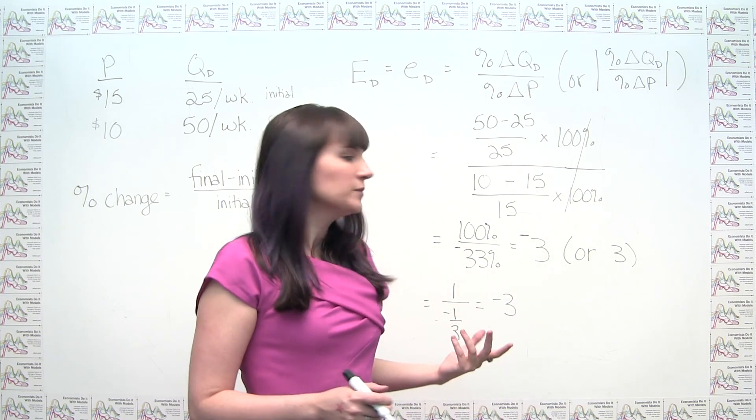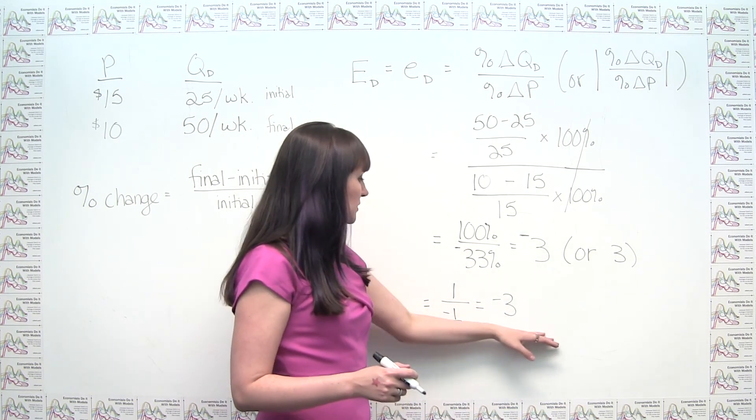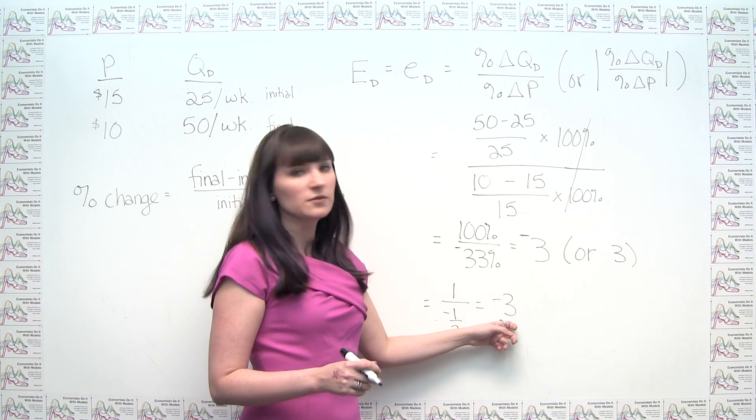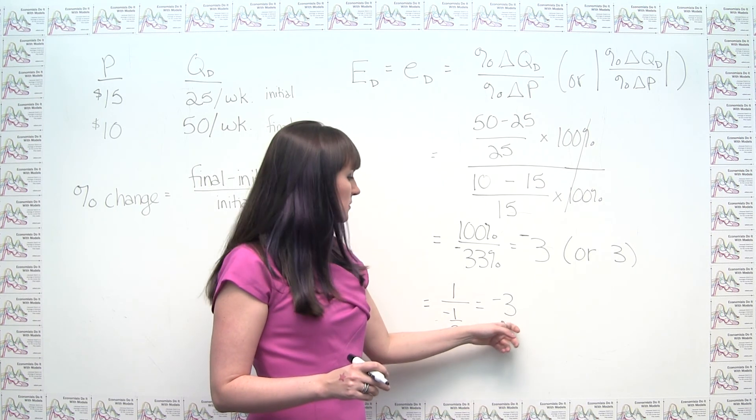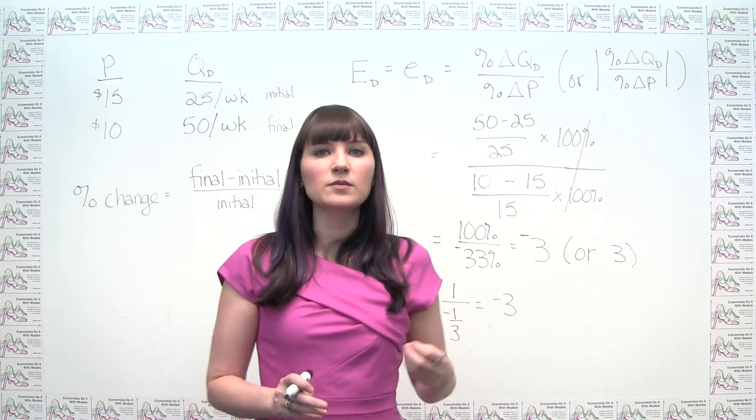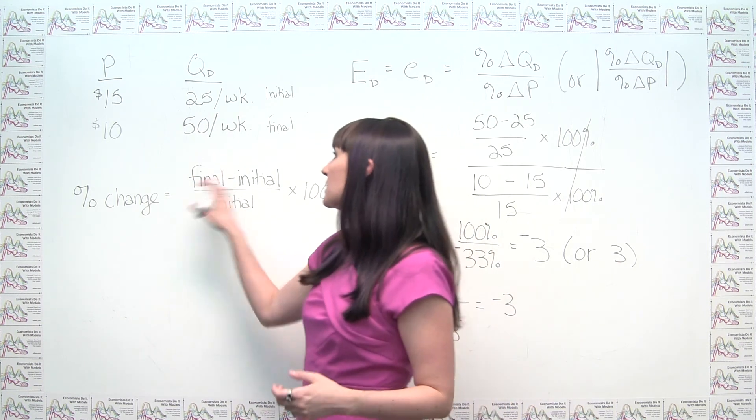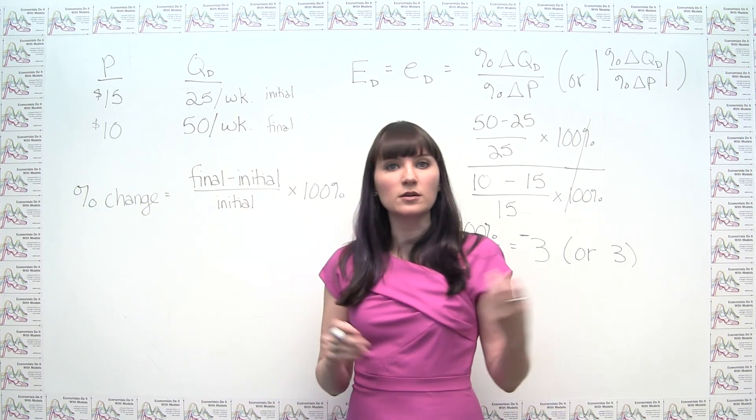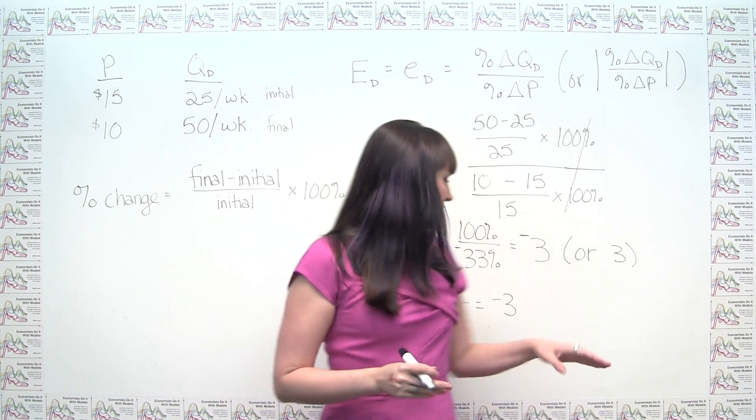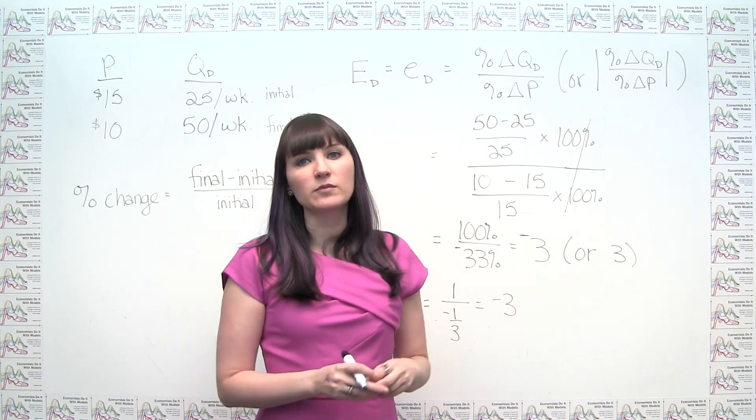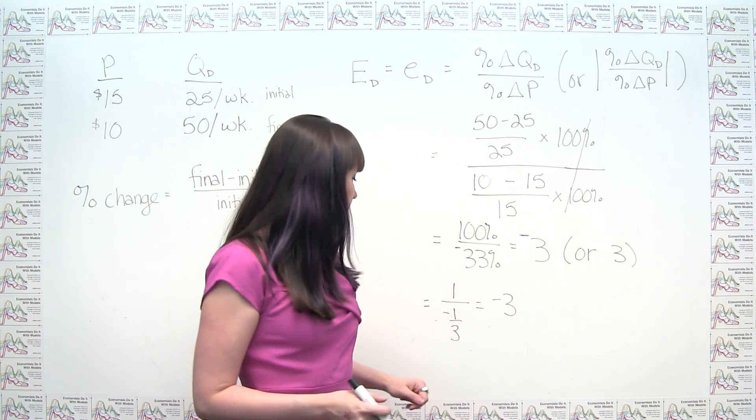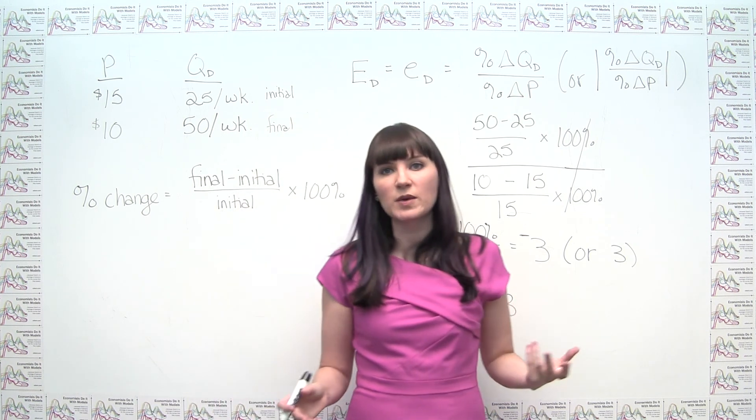So this is pretty straightforward. And we can note a few things here. We note that because the magnitude of this number is larger than 1, we can conclude that our demand for t-shirts in this particular market is what we call elastic. If this number was in magnitude smaller than 1, we'd have inelastic demand. So it's helpful to think about where this falls in the overall spectrum.